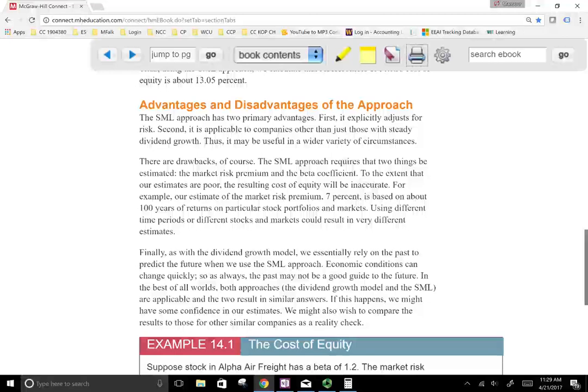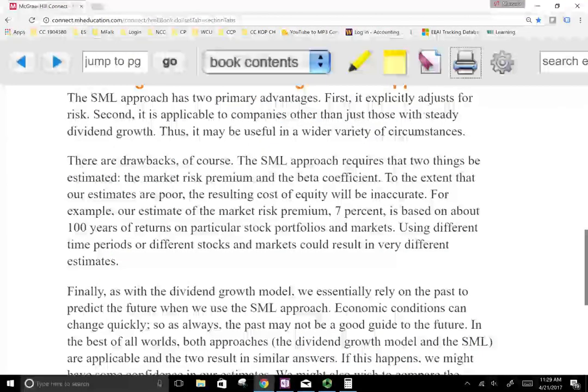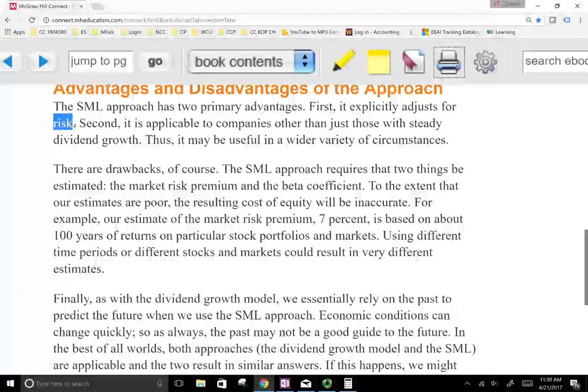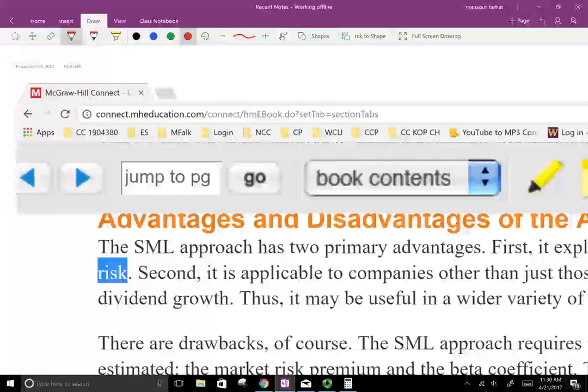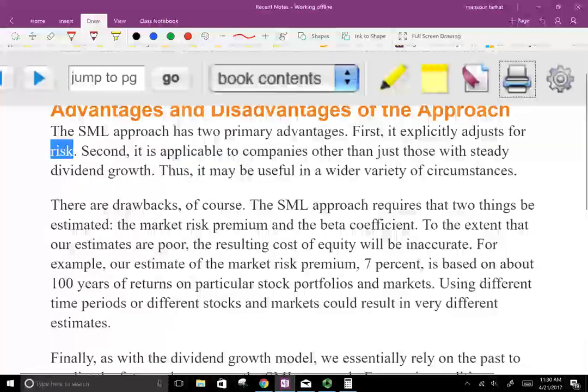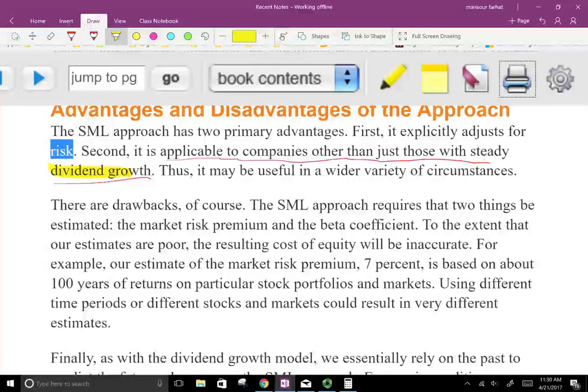So this is using the SML approach to estimate the expected rate of return. So let's take a look at the advantages and disadvantages of this approach. For one thing, what's the advantage? One of the advantages is it takes into account risk. Why? Because we're starting with the risk-free rate and moving upward. So when we calculate the risk premium, what we are saying is this is the premium that's above the risk-free rate. So we're looking at risk. It's applicable to companies other than just with dividend growth. So remember, the dividend growth model only could be used for companies that pay dividend. The SML line, you don't have to be paying dividends. So we could still find your expected rate of return, although you don't pay any dividend.